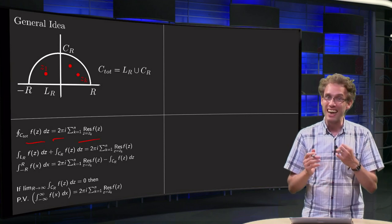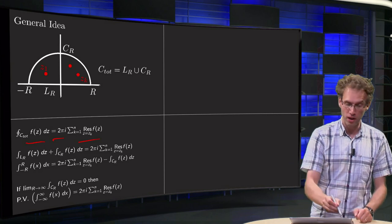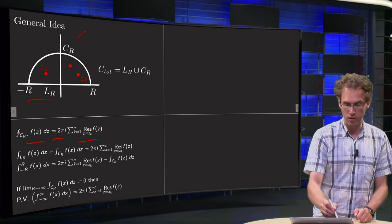So what's the idea then? This total integral, in this case, is going to consist of two parts. The one along LR and the other along CR.